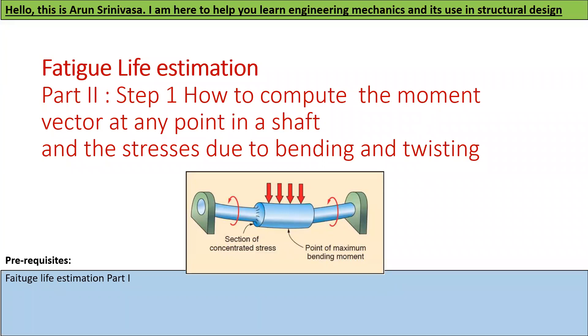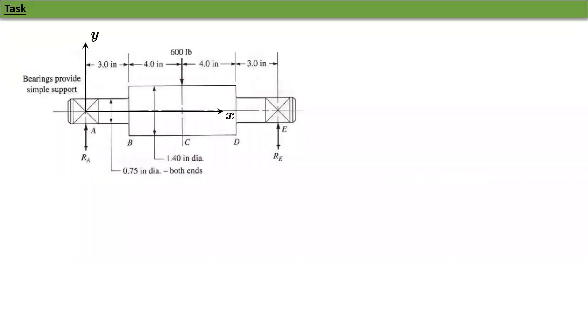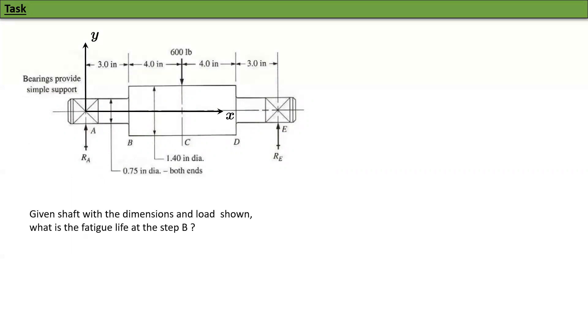What's our task here? I have a beam — a stepped shaft — and there is no torque on the shaft. It's just a shaft with a 600 pound force on it. All the dimensions are given, and what we want to find is the fatigue life at the step B. Each location will have a different fatigue life, and we have to compute the fatigue life at different locations to figure out which is the worst — which has the smallest life.